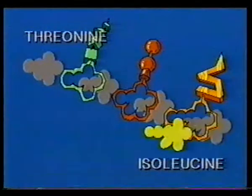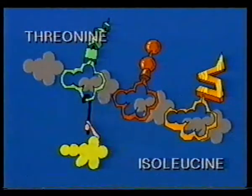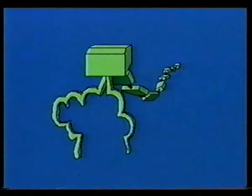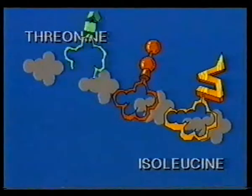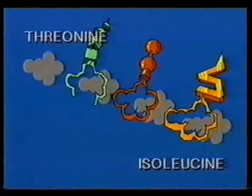To control this reaction, isoleucine — the end product — actually acts as an off-switch. It competes for one of the enzymes: isoleucine combines chemically with this enzyme to produce a new molecule. This new molecule is no longer capable of acting as an enzyme in the reaction, so isoleucine shuts down its own production.